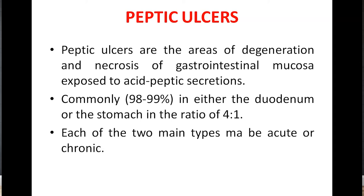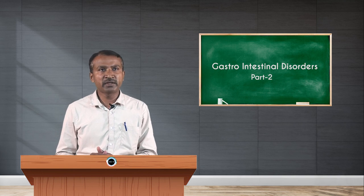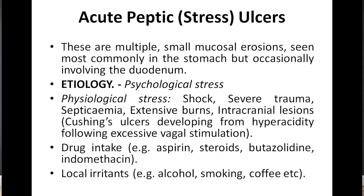Peptic ulcers are areas of degeneration and necrosis of gastrointestinal mucosa exposed to acid peptic secretions. Commonly — in 98 to 99 percent of cases — they occur in either the duodenum or stomach in a ratio of 4:1, meaning peptic ulcers are more common in the duodenum. Each of the two main types may be acute or chronic. Acute peptic ulcers, also called acute stress ulcers, are multiple small mucosal erosions most commonly seen in the stomach but occasionally involving the duodenum.